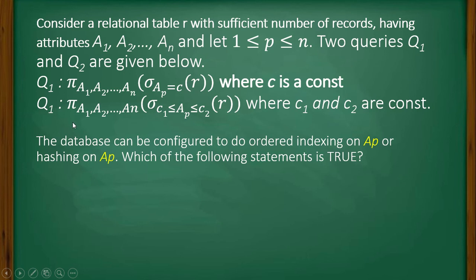The other query is π(A1, A2, ..., An)(σ(c1 ≤ Ap ≤ c2)(R)) where c1 and c2 are constants.